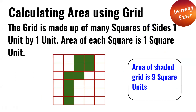Calculating area using grids. The grid is made up of many squares of size 1 unit by 1 unit. The area of each square is 1 square unit.